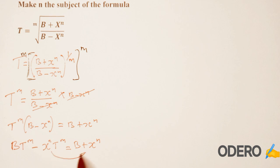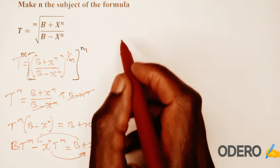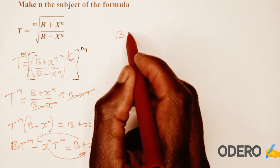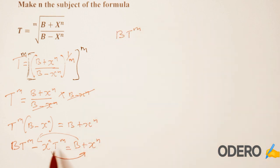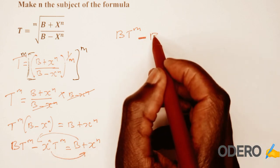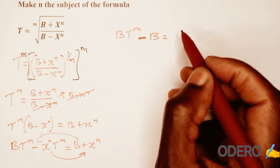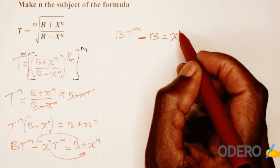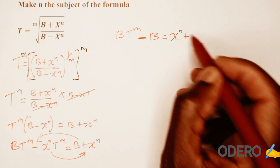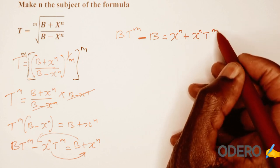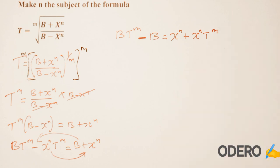So we take this one to this side and then take b to the other side. You will have b t raised to m, then taking this term to the other side gives minus b, is equal to x raised to n plus x raised to n t raised to m.